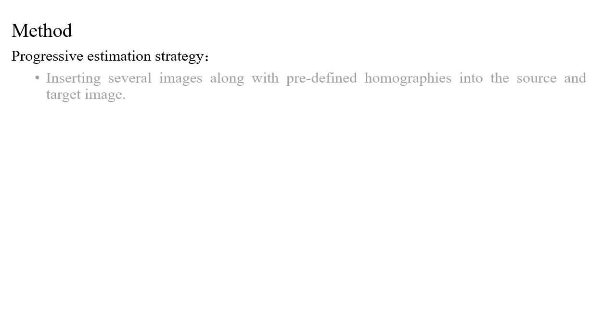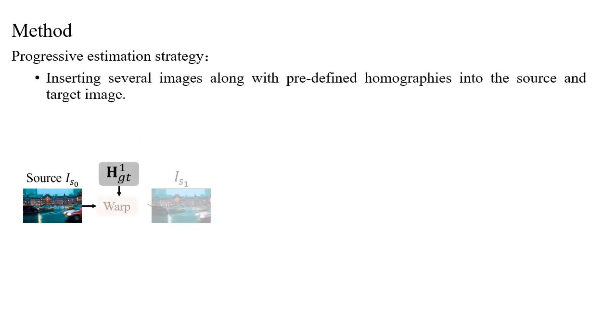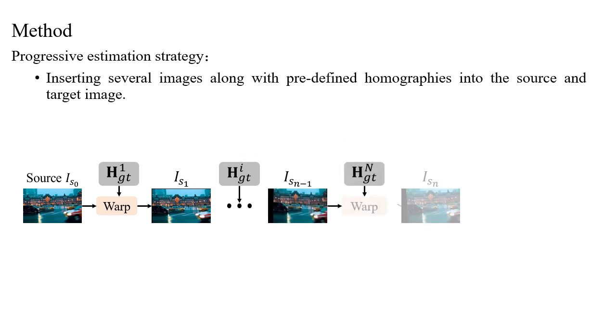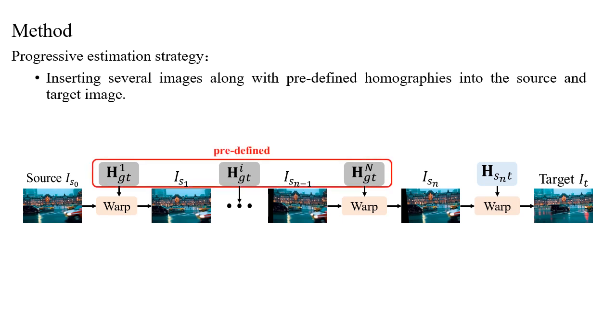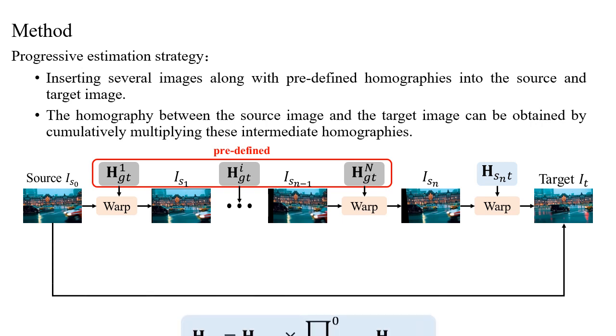To this end, we propose a progressive estimation strategy to address the large baseline challenge. Specifically, we convert the large baseline problem into multiple intermediate phases by inserting several images, along with pre-defined homographies into the source and target image. The homography between the source image and the target image can be obtained by cumulatively multiplying these intermediate homographies.